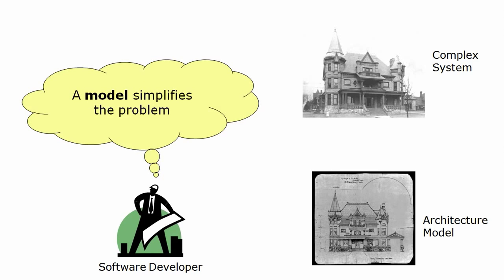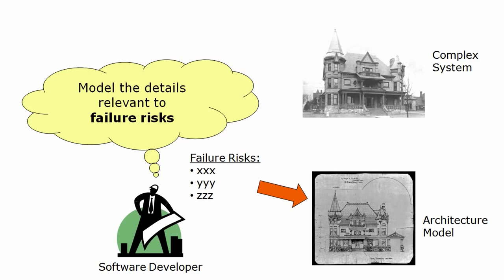The alternative is to build a model that simplifies the problem. In our field, this is considered unusual, yet it's standard practice in every other engineering field. But a model of what exactly? We can't consider every possible failure, just like we cannot understand everything. So we decide which failures are possible or likely - that is the risk - and we build a model that lets us reason about those risks.